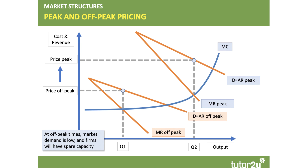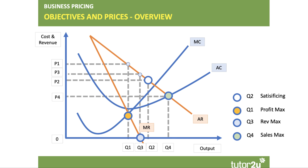This diagram is brilliant because it shows all the key objectives and prices in one diagram. Q1 is profit maximization, Q3 is revenue maximization, Q4 is sales maximization, and Q2 is satisficing — somewhere in between — where you choose a price and output that makes a profit but not necessarily the maximum profit. The key point is that the objectives of the firm influence pricing strategies, which in turn affect outcomes in markets in terms of consumer surplus, economic efficiency, and social welfare.